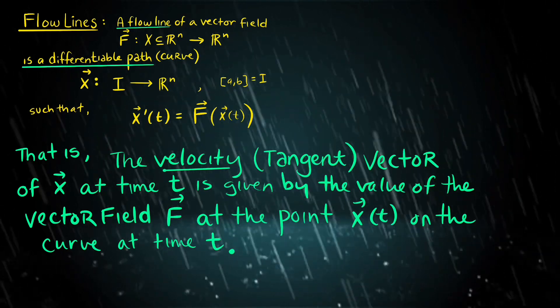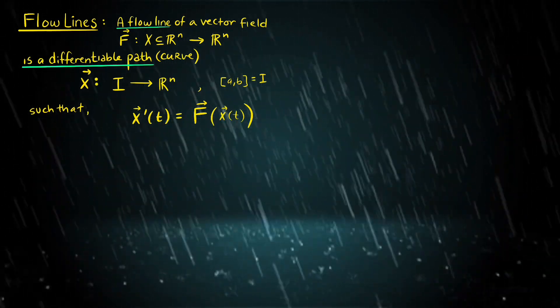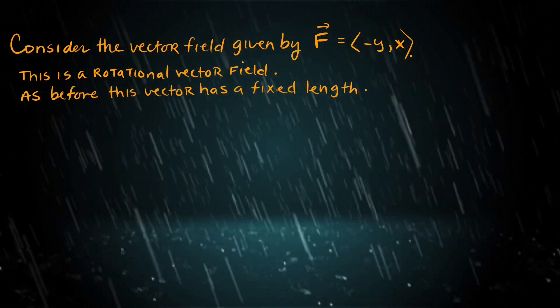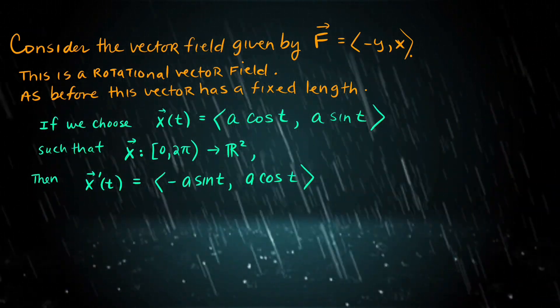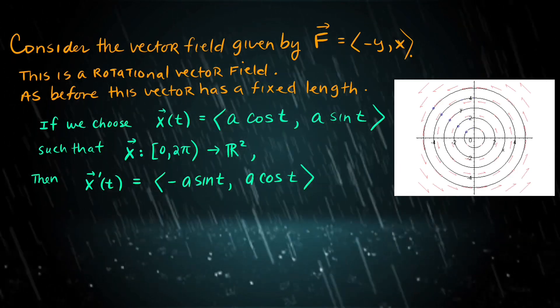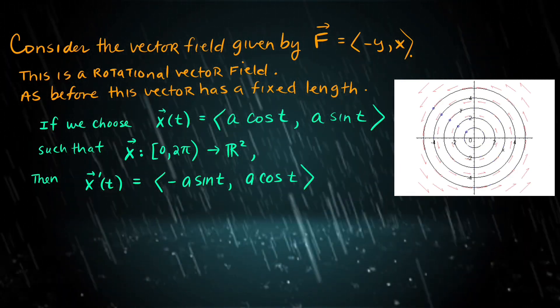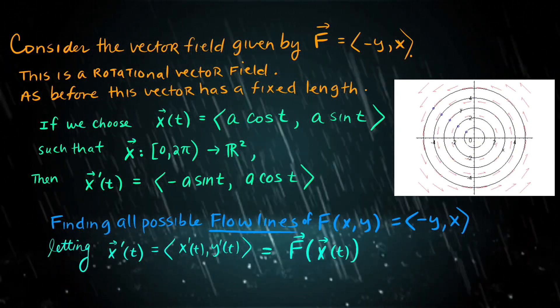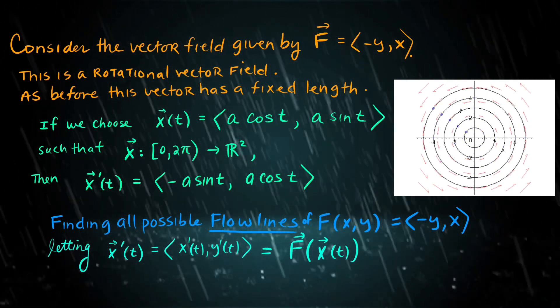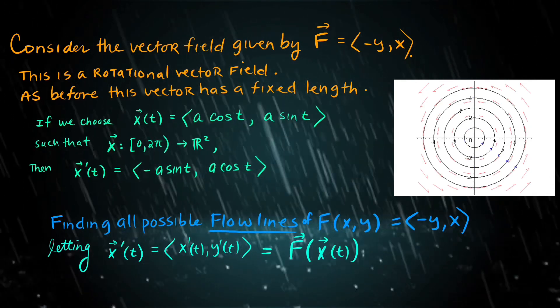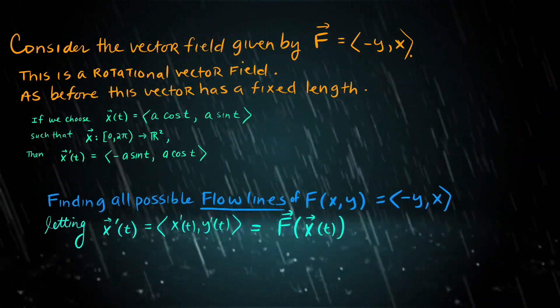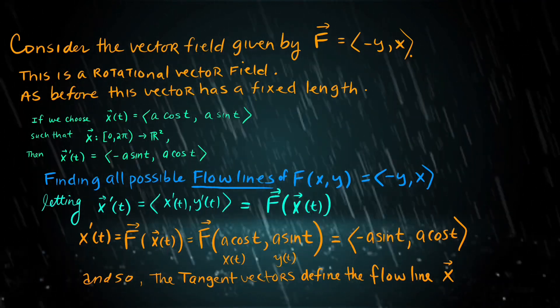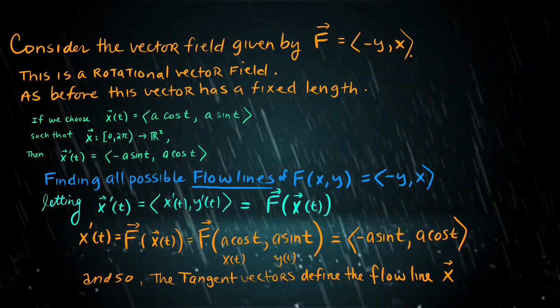If we consider a rotational vector field given by F = (-y, x), this vector is a fixed length on a respective level set of circles. If we follow the path along the vectors, we can travel along a circular path parameterized by x(t) = (a cos t, a sin t). As t travels from 0 to 2π completing a full revolution, we can define the tangent vectors (-a sin t, a cos t) corresponding to this exact field F, flowing along the path of the circle in a rotational manner.